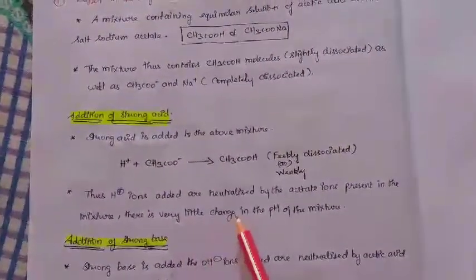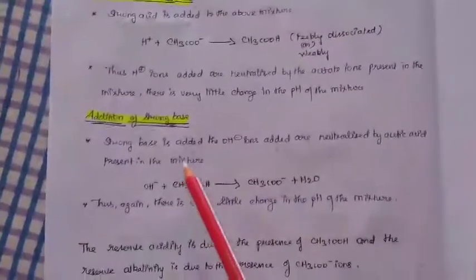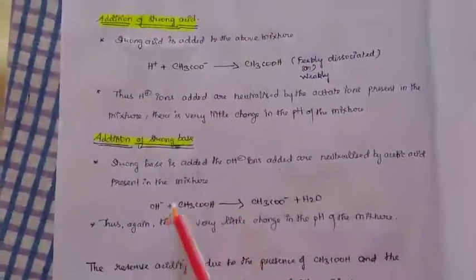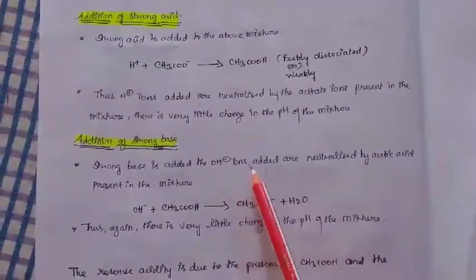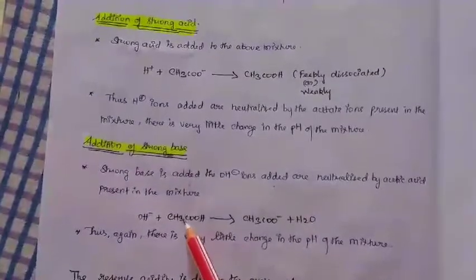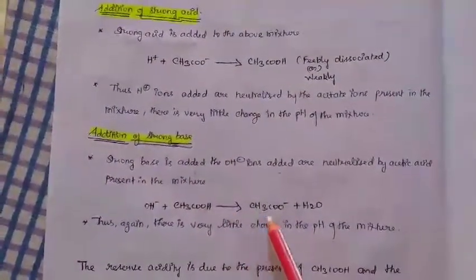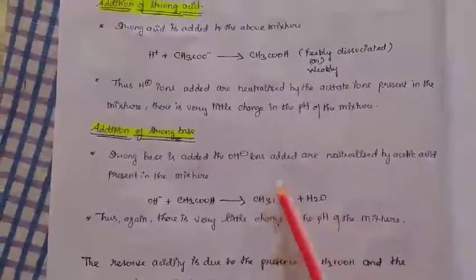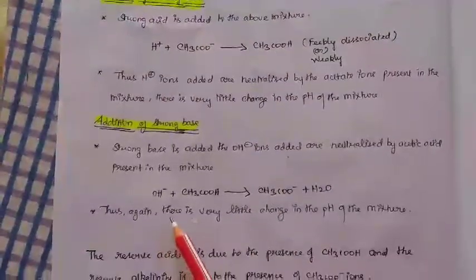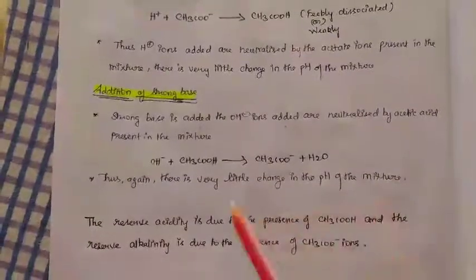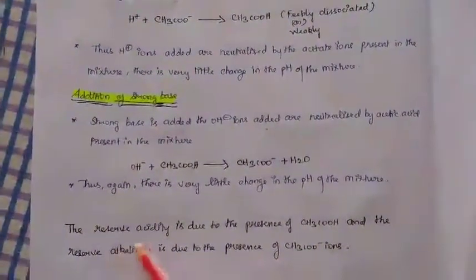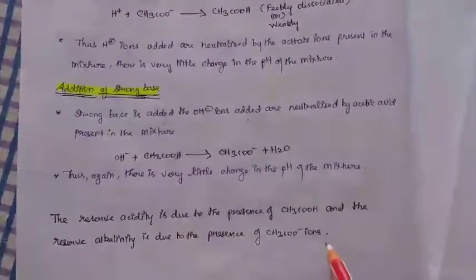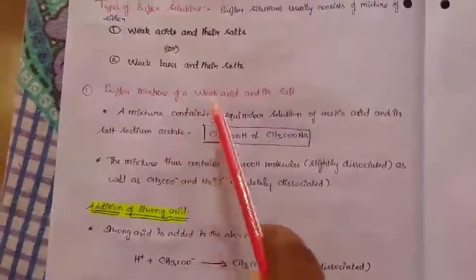There is very little change in the pH of the mixture. Suppose if we add a strong base to the acetic acid buffer mixture, the OH⁻ ions are neutralized by acetic acid to form CH3COO⁻ + H2O. There is a little change in the pH of the mixture. The reserve acidity is due to the presence of acetic acid, and the reserve alkalinity is due to the presence of acetate ions.